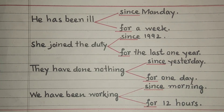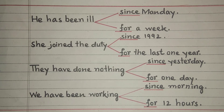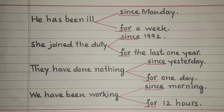Agar aap yeh bolna chahte hain: 'Unhone kal se kuch nahi kiya' — toh is tarah bolna hoga: They have done nothing since yesterday. Lekin agar aap yeh bolna chahte hain: 'Unhone ek din se kuch nahi kiya' — toh: They have done nothing for one day.